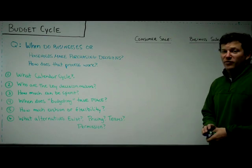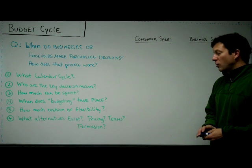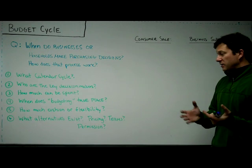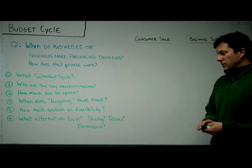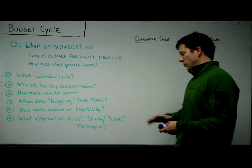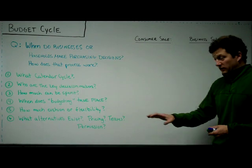How much cushion or flexibility is there in the rules and processes? Does that mean you can violate those things or can you never violate them? That's important. And what alternatives exist if you do need to cross some of the budgeting rules or budget cycle rules? Can you change pricing? Can you change terms? Whose permission do you need?